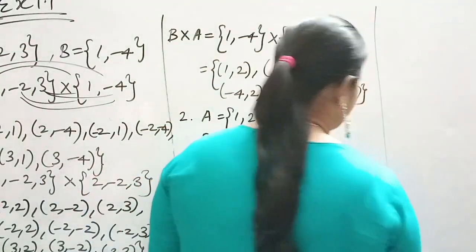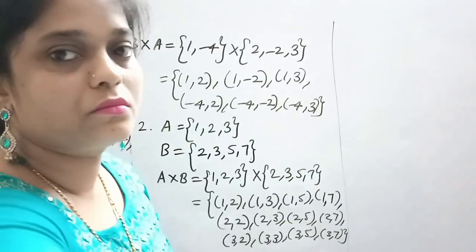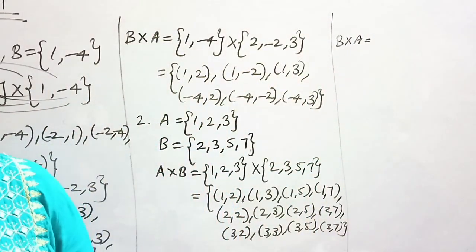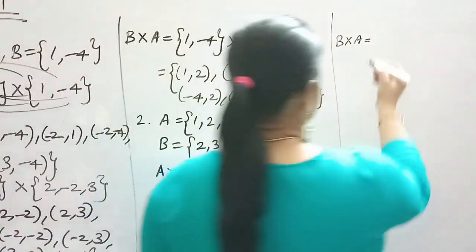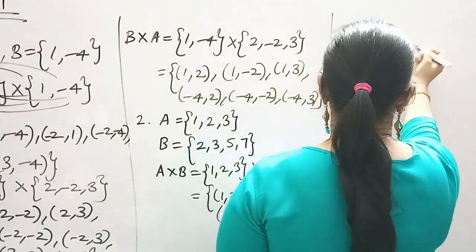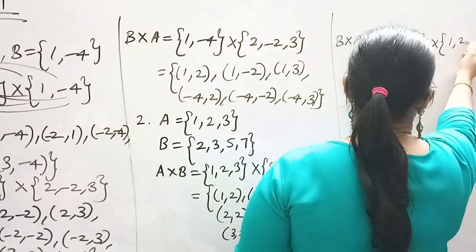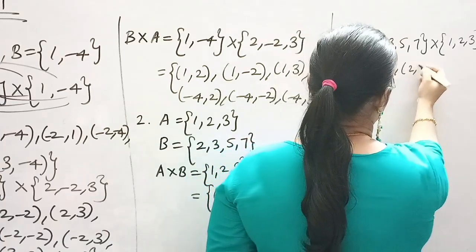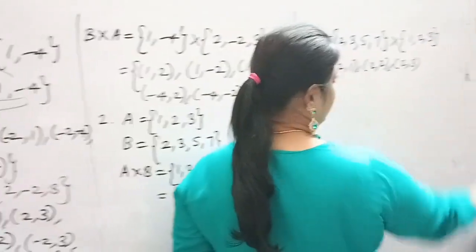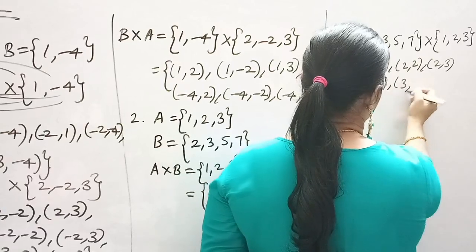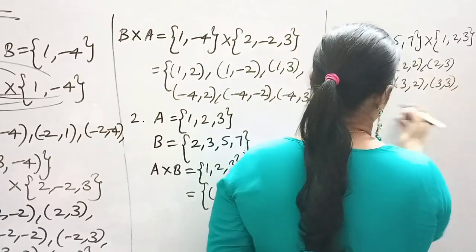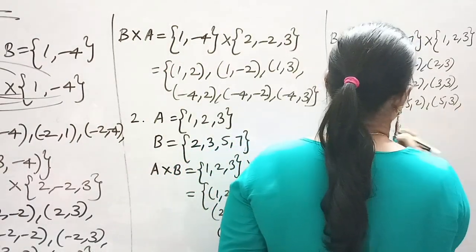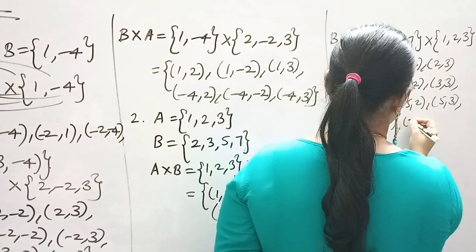Next B cross A — B is first, A is next. B set is {2, 3, 5, 7} and A set is {1, 2, 3}. The ordered pairs are: (2,1), (2,2), (2,3), (3,1), (3,2), (3,3), (5,1), (5,2), (5,3), (7,1), (7,2), (7,3). This is your B cross A.